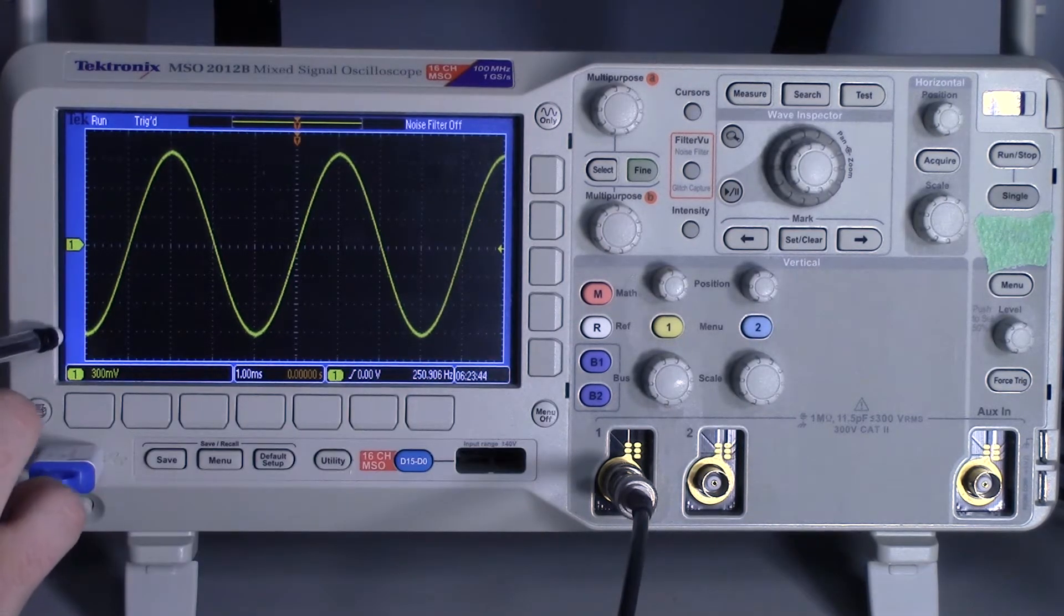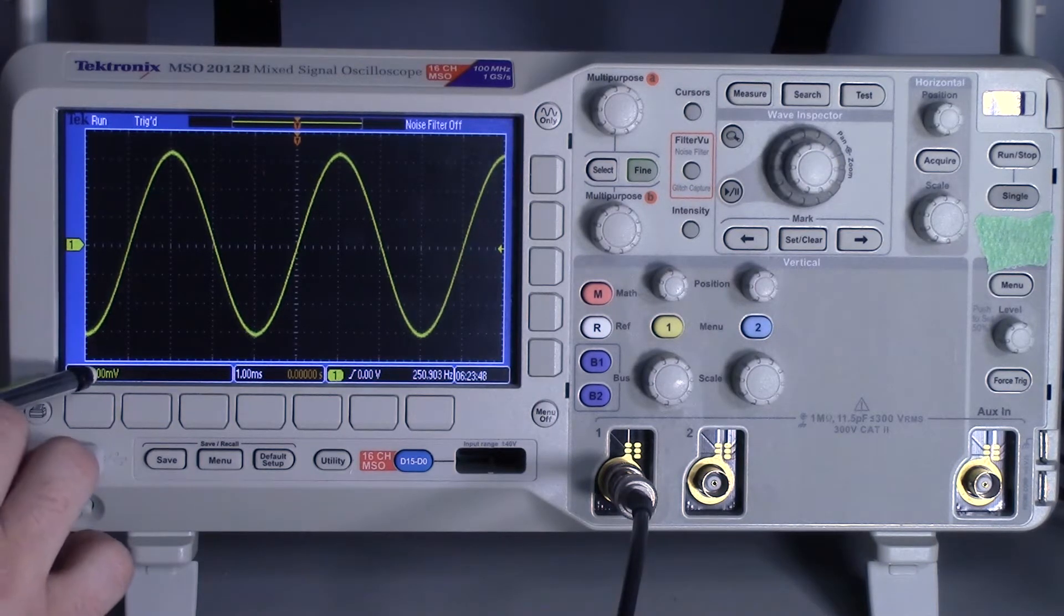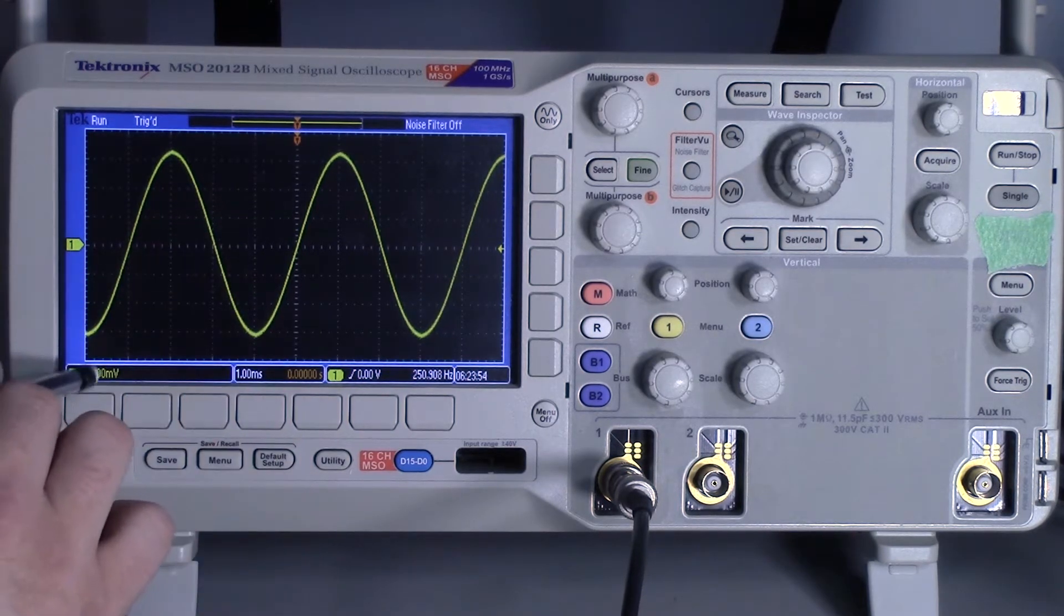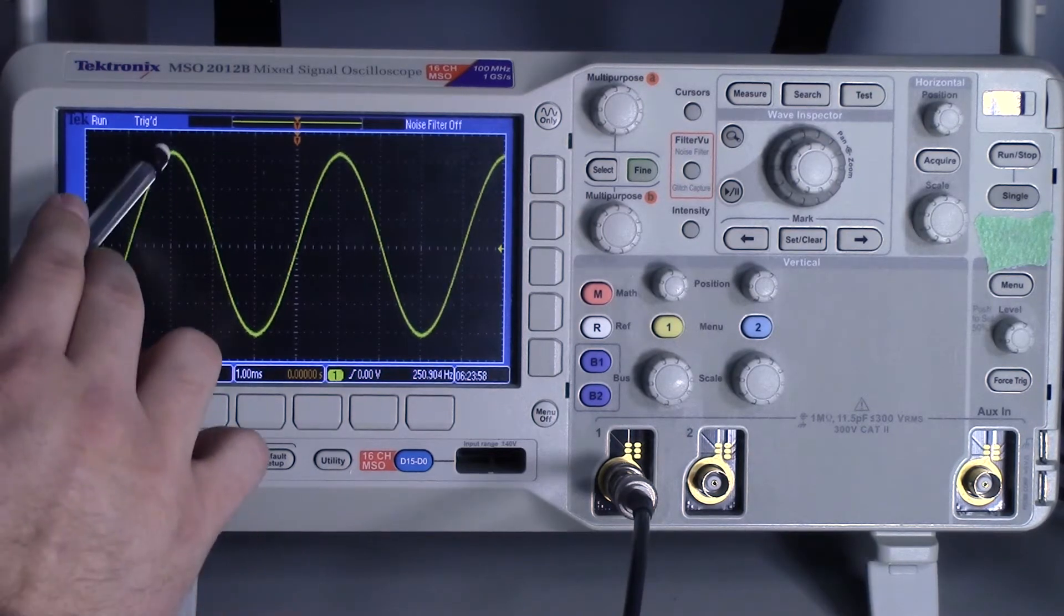And then we can see the vertical scale is one, two, three, four, five, six times 300 millivolts. That's going to be about 1.8 volts plus two-fifths of that. So it's going to be roughly two volts from peak-to-peak.